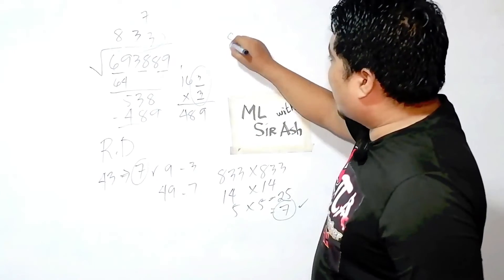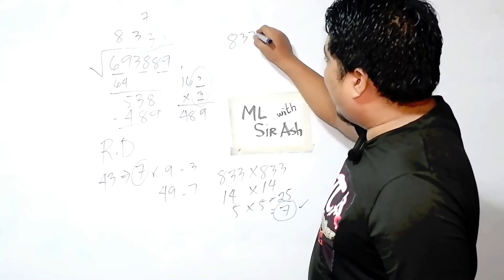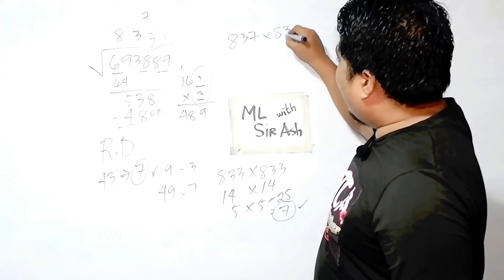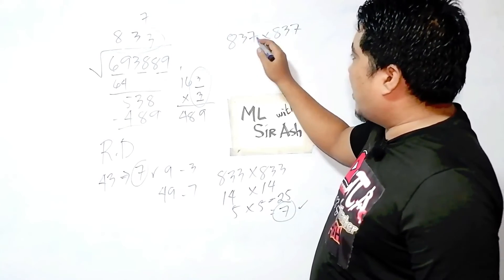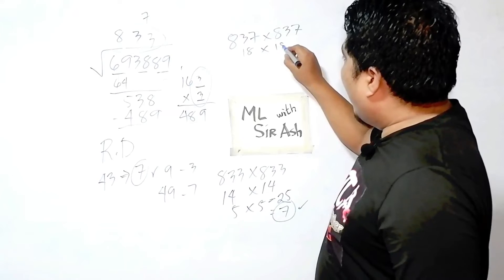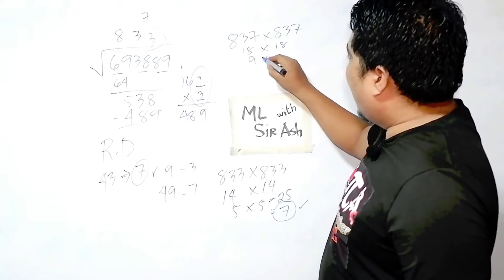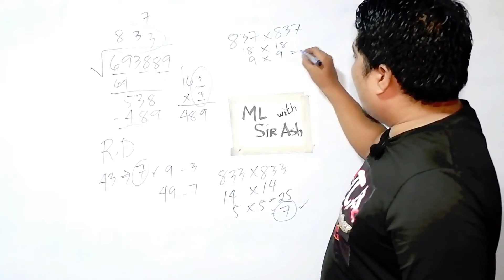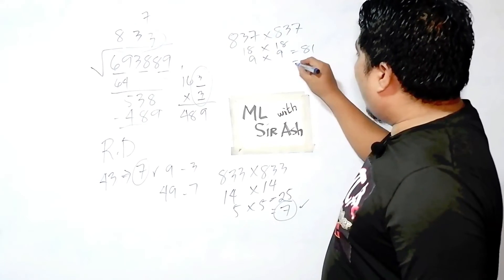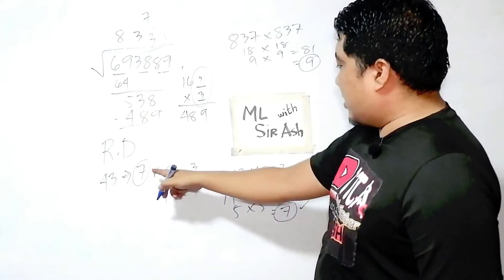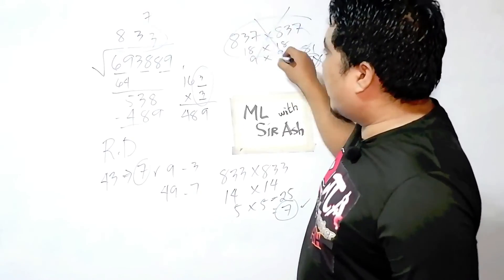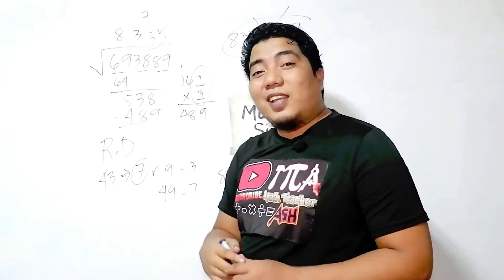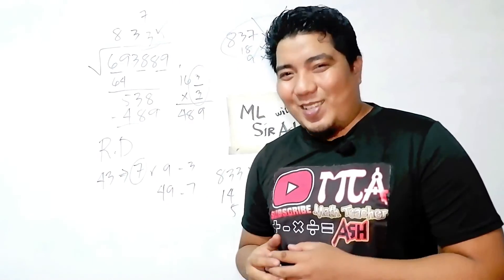For checking purposes, let's consider 837. Adding 8 plus 3 plus 7 is 18. This becomes 9, and 9 times 9 is 81, which is still 9. And 9 is not the same as our root digit of 7. Therefore 837 is not the correct answer, and our final answer is 833.